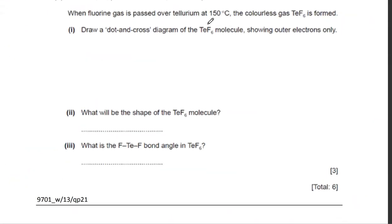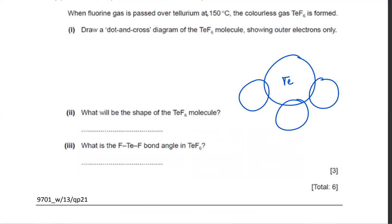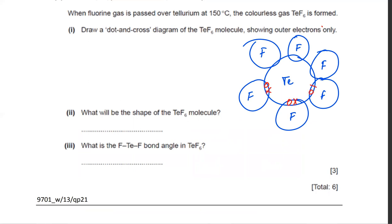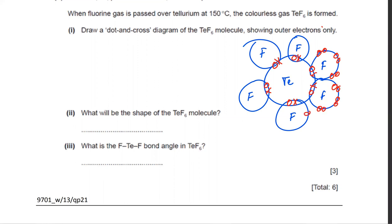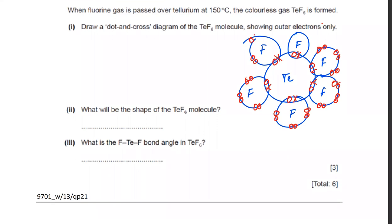Draw a dot-and-cross diagram of a TeF6 molecule. Tellurium is in group six with six electrons, so draw six fluorines around it — Te makes six bonds with six fluorines — with the remaining electrons on fluorine shown as lone pairs. The shape is octahedral, with bond angles of 90 degrees.